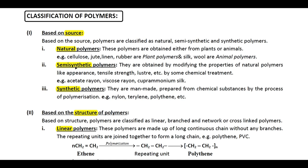Semi-synthetic means partially man-made. Semi-synthetic polymers are obtained by modifying the properties of natural polymers — like appearance, tensile strength, and luster — by some chemical treatment. Natural polymers like cellulose or cotton do not have high tensile strength and lack luster. To improve these properties they are chemically treated, and the modified cellulose formed is a semi-synthetic polymer. Examples include acetate rayon, viscose rayon, and cuprammonium silk.